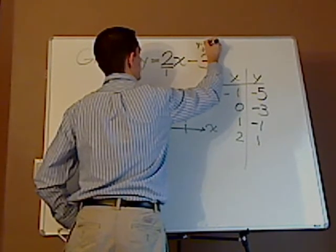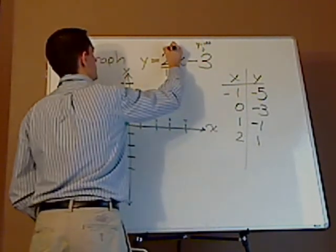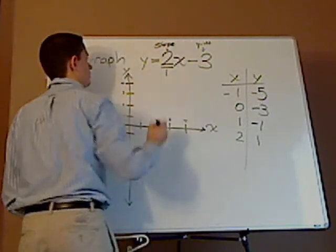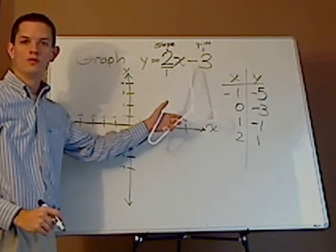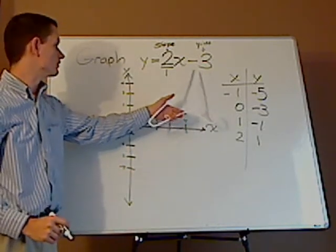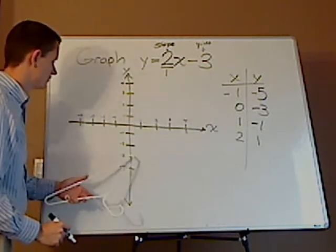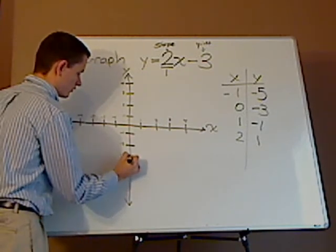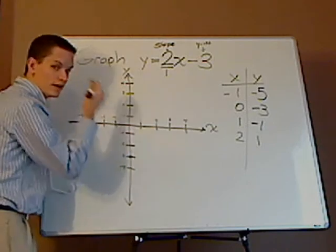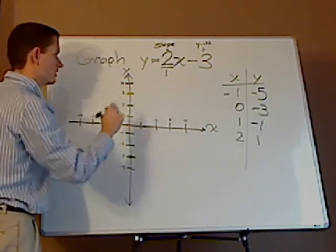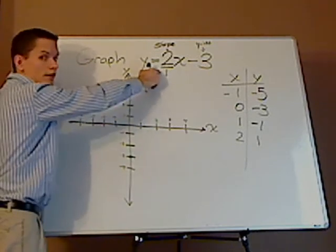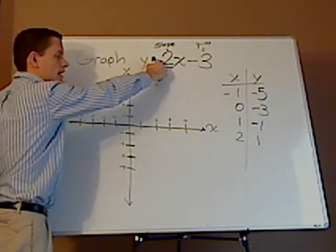This is your y-intercept and this is your slope. When you graph, you want to start with your y-intercept. So your y-intercept is negative three. Once you know this way, it's much quicker than just plugging in the numbers. Your slope is two over one, so it's rise over run.